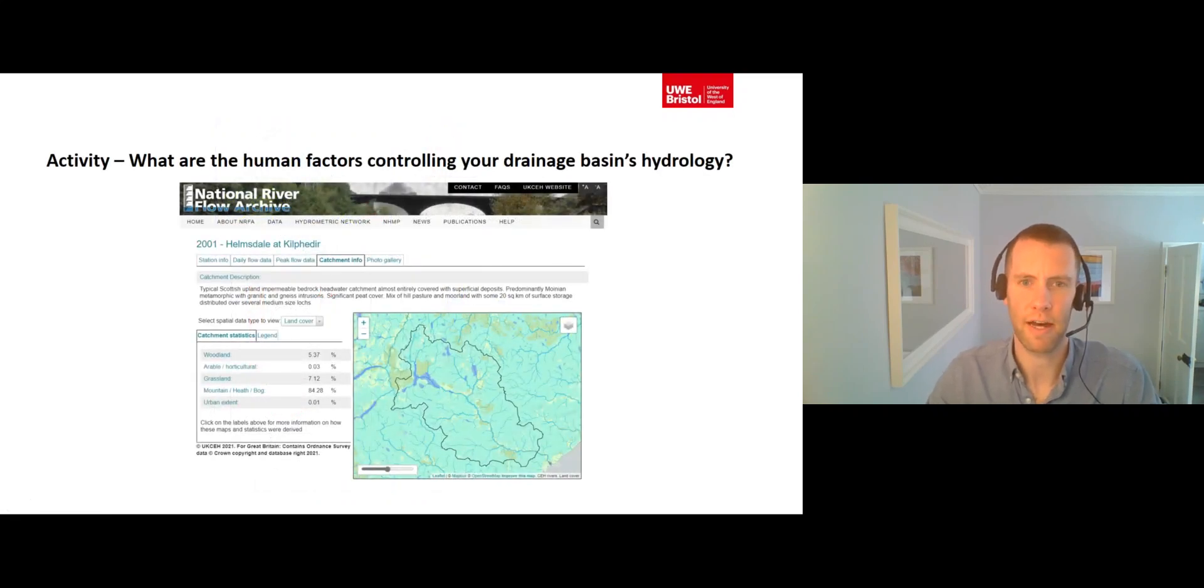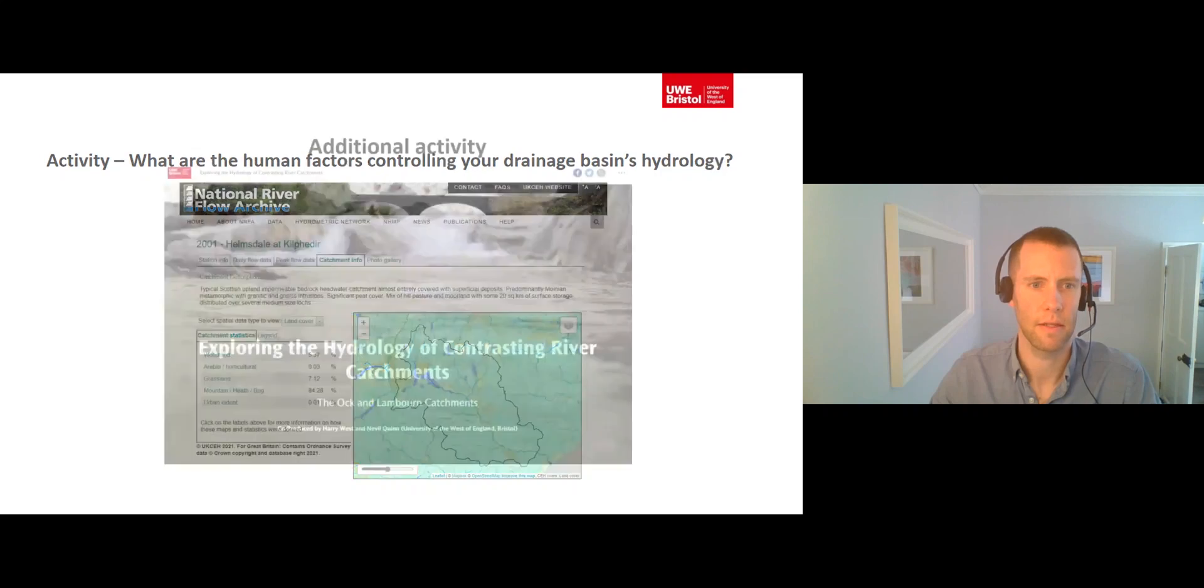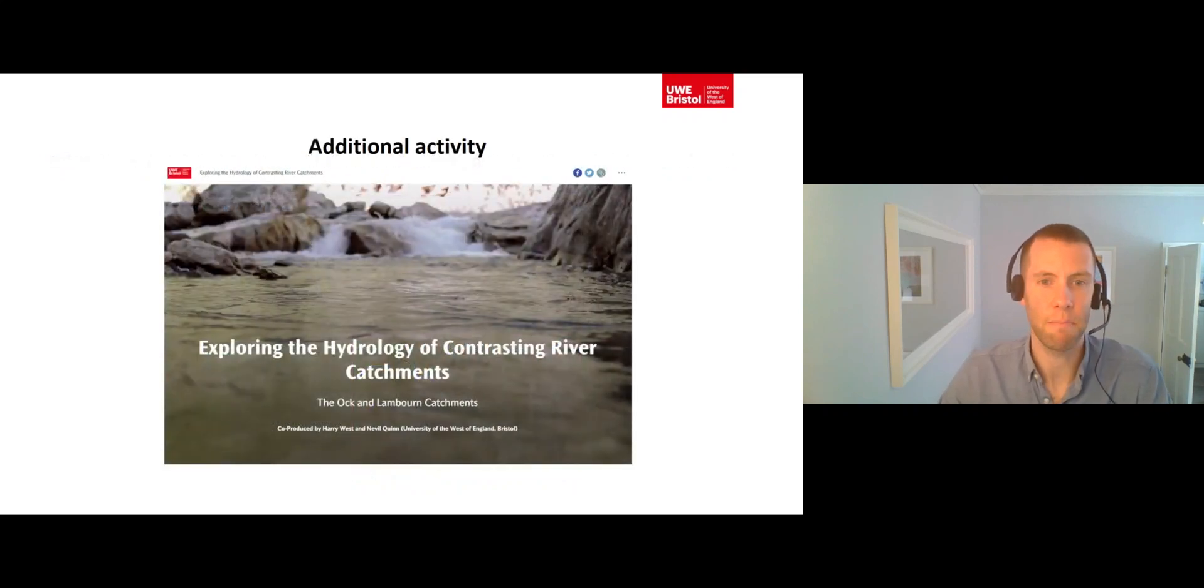You can learn more about the human factors affecting drainage basin hydrology by completing this activity that is described in your worksheet. This activity makes use of information describing the characteristics of drainage basins for each of the flow gauges hosted on the National River Flow Archive. Additionally, to learn even more about the factors that affect drainage basin hydrology, please try out this excellent interactive story map that has been put together by my colleagues Harry West and Neville Quinn.